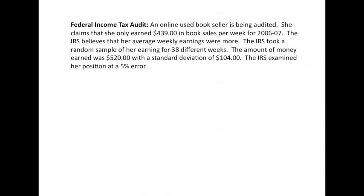An online used bookseller is being audited and she claims that she only earned $439 in book sales per week for the 06-07 year. The IRS believes that her average weekly earnings were more. The IRS took a random sample of her earnings for 38 different weeks. The amount of money earned was $520 a week with a standard deviation of $104. And the IRS examined her position at a 5% error.